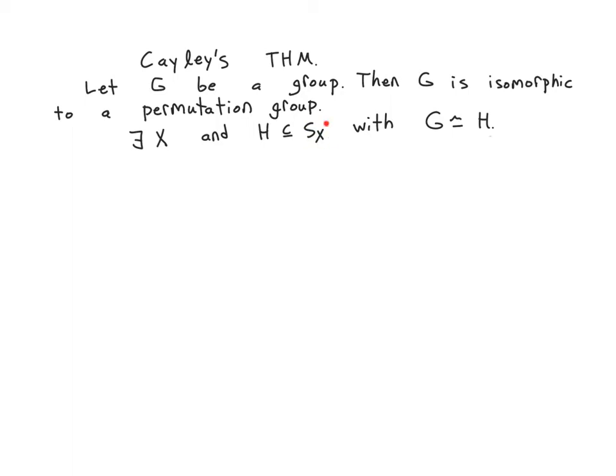So remember, the symmetric group on X consists of all permutations of X, so all bijections from X to itself, which is a group under composition. And a permutation group is any subgroup of SX.